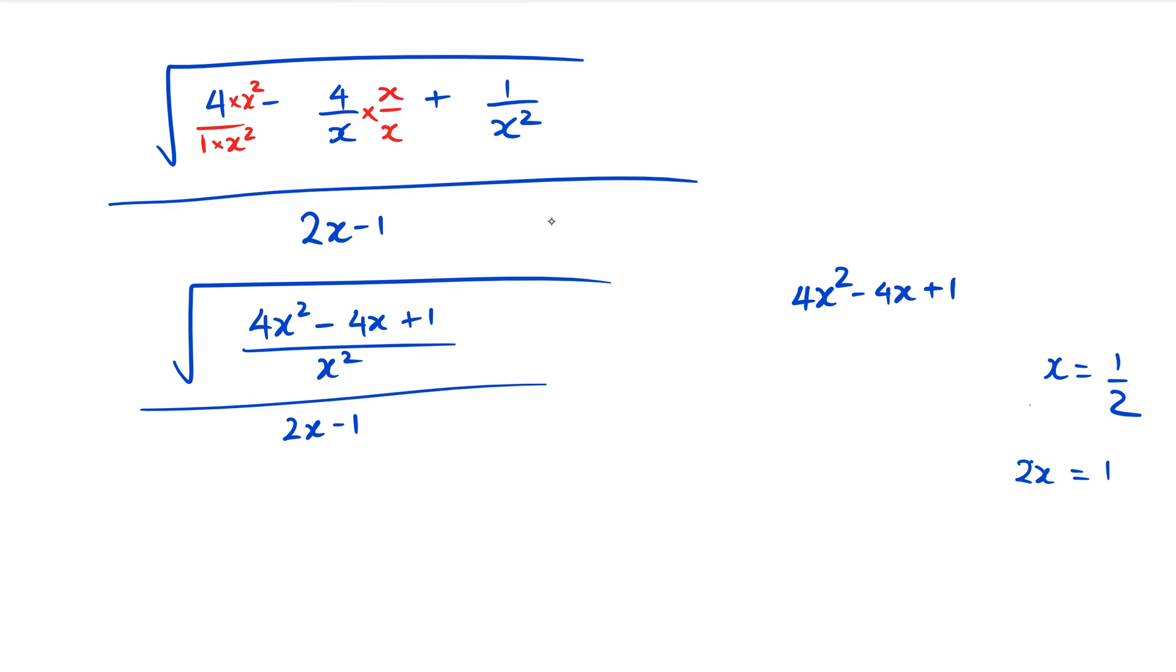2x - 1 = 0. That means our quadratic here is going to factorize to (2x - 1)(2x - 1).